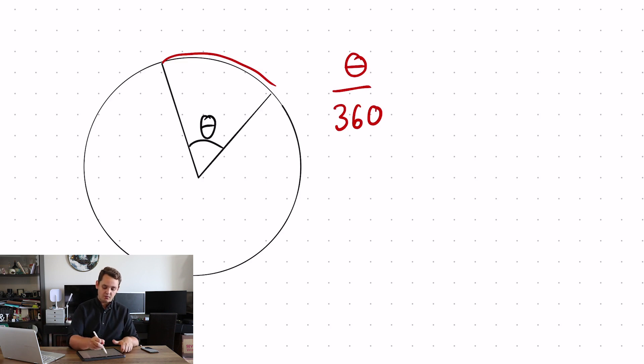So to find the length of the arc, all I have to do is theta over 360 times 2πr.